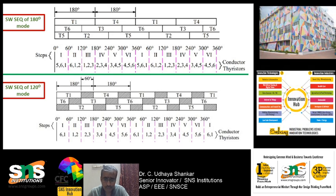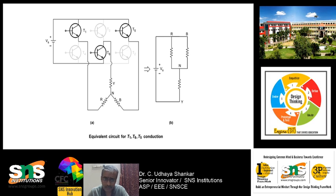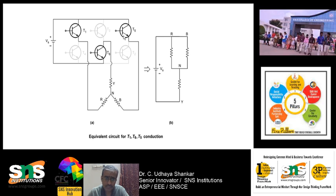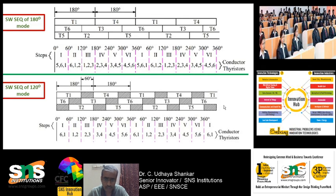Let us go into the analysis of 180-degree mode of conduction. In case of 180-degree mode, three transistors will be on. Let us take the first case: T1, T5, and T6 are in on condition — that is, transistors 5, 6, and 1 are on. T5 and T1 are upper transistors whereas T6 is a lower transistor. T2, T3, and T4 are switched off, whereas T1, T6, and T5 are switched on.